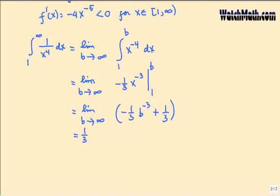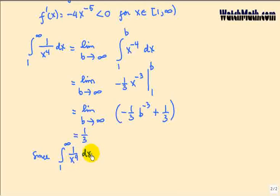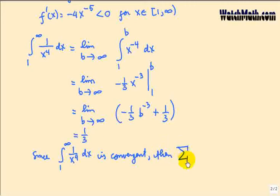Now, according to the integral test, since the integral from 1 to infinity of 1 over x to the 4 dx is convergent, hence the series — the sum from n equals 1 to infinity of 1 over n to the 4 — is also convergent.